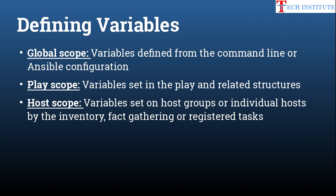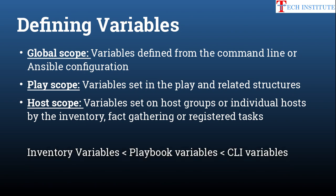The third method is host scope, where you define variables inside your inventory file — either for a specific host or for a group of hosts. You can also get values from fact gathering and registered tasks. If the same variable is defined in multiple places, inventory variable has the lowest priority and command-line or Ansible configuration has the highest priority. Note that defining variables in inventory is an old and now obsolete method.